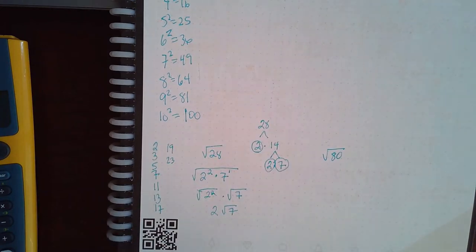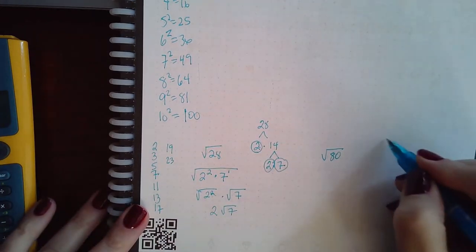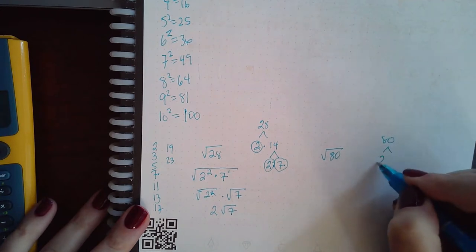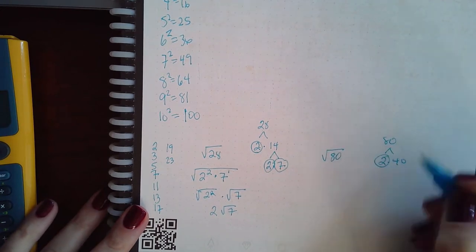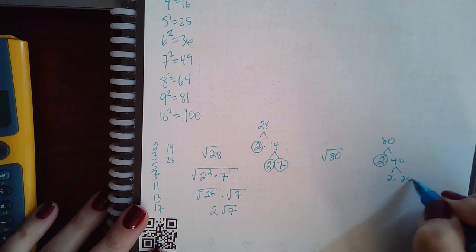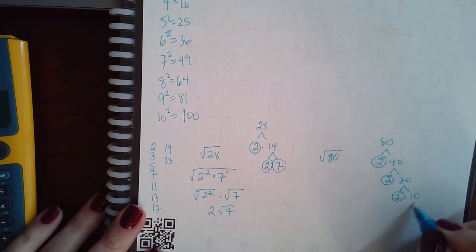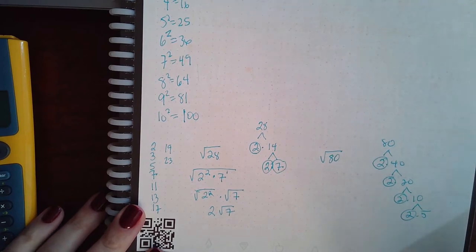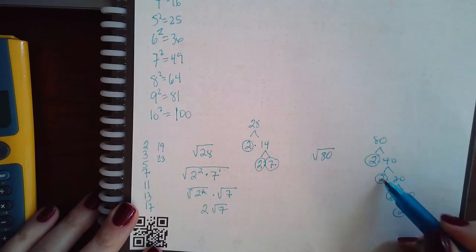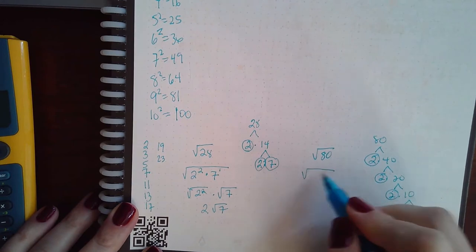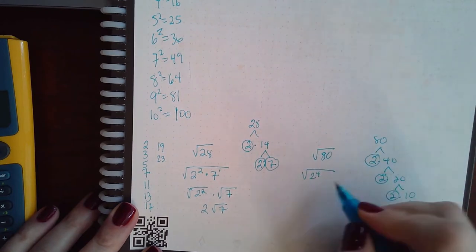Similarly, we could do the same thing for 80. So 80 is 2 times 40, this guy's a prime; that's 2 times 20, that's a prime; 2 times 10, that's a prime; 2 times 5, that's a prime.